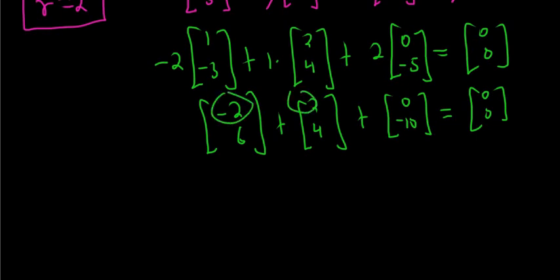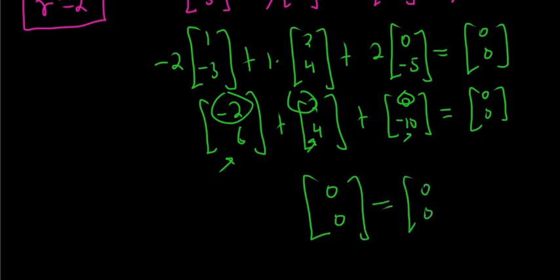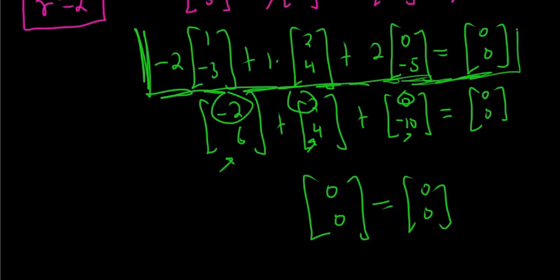And it is. Yay! Right? Negative 2 plus 2 plus 0 is 0. 6 plus 4 is 10. And you add negative 10 and you get 0. So it is indeed correct. So we have found a non-trivial linear combination of these three vectors, which is equal to the 0 vectors.